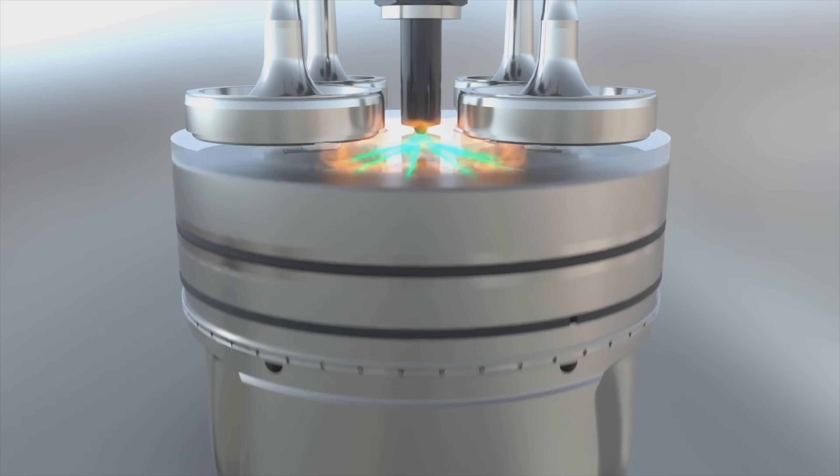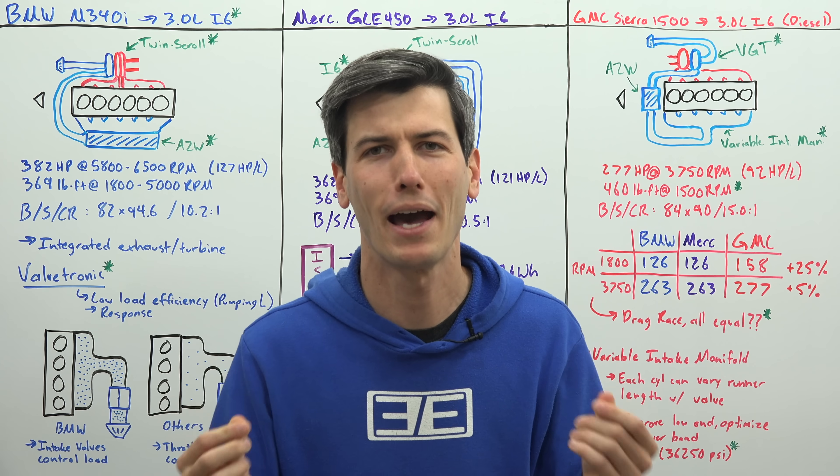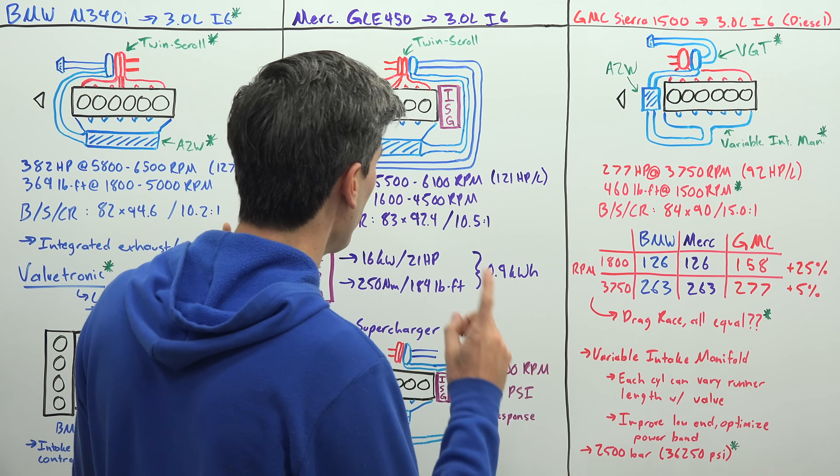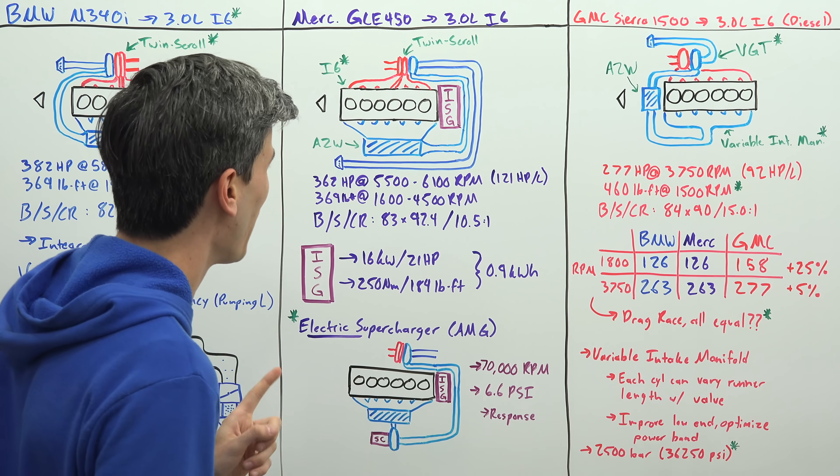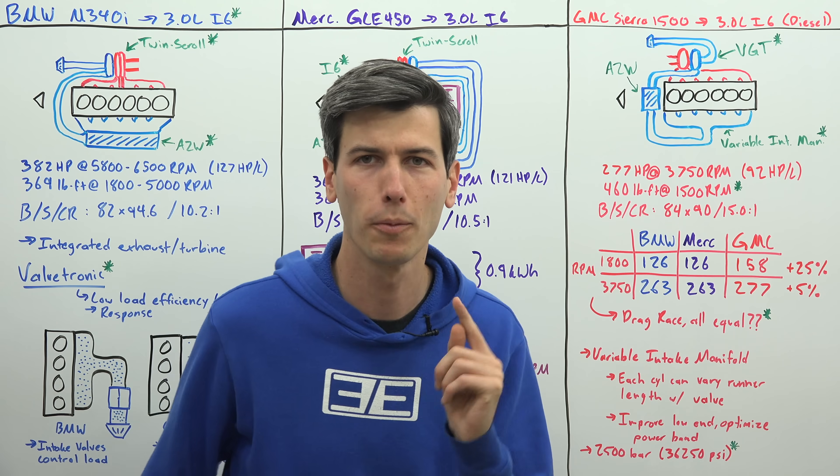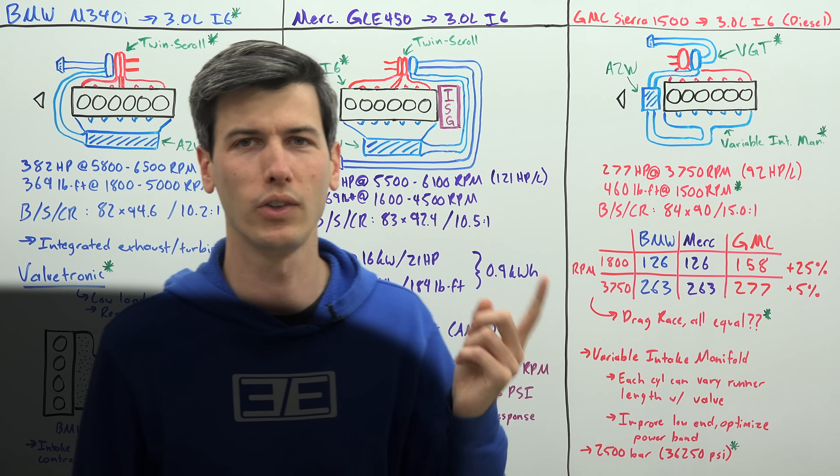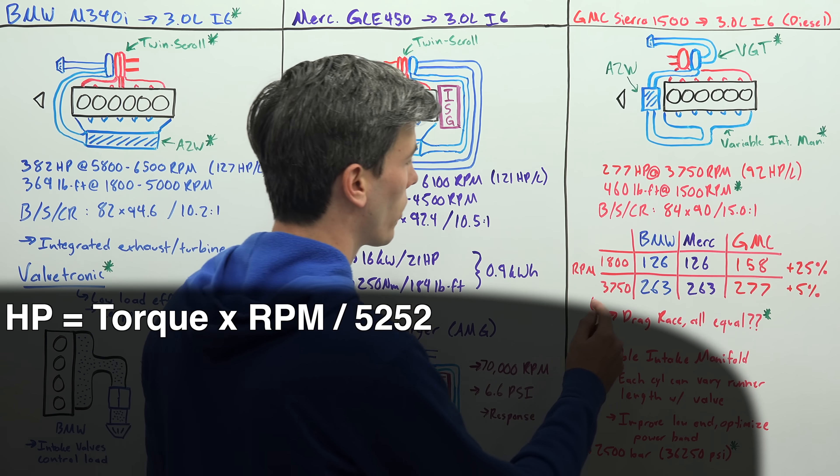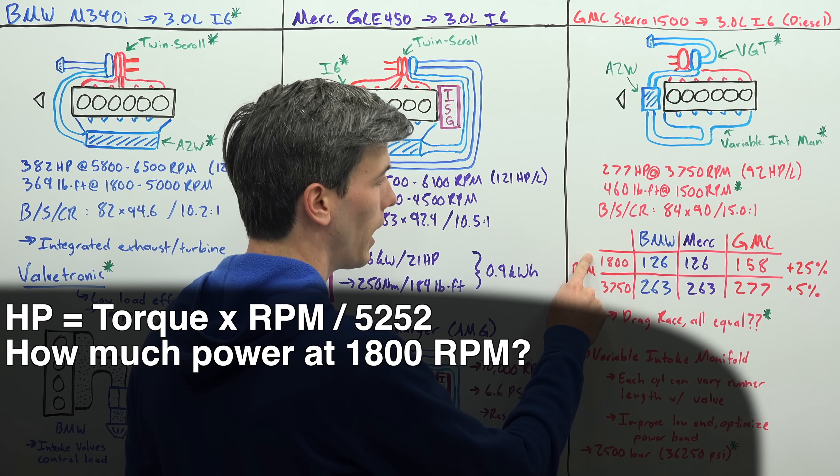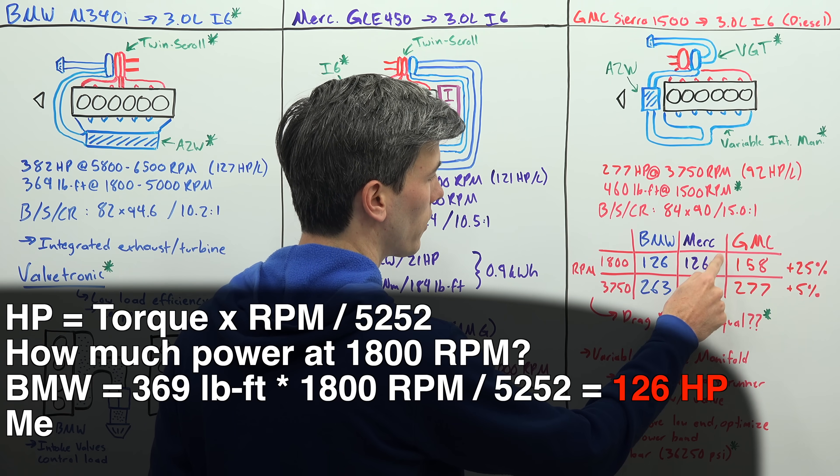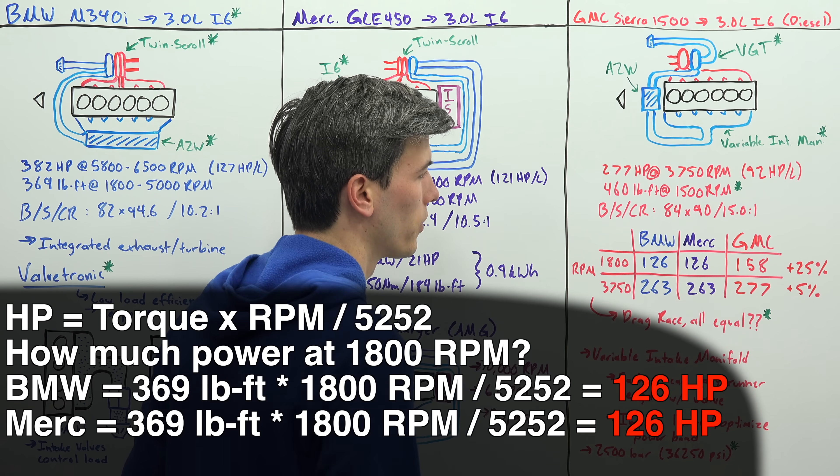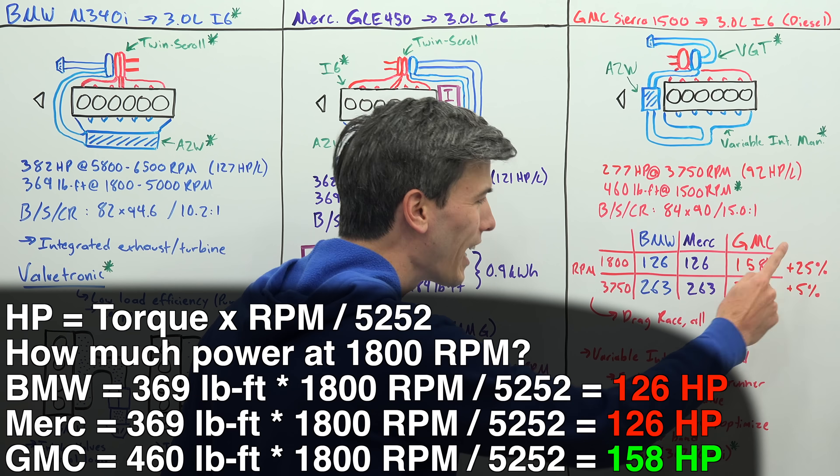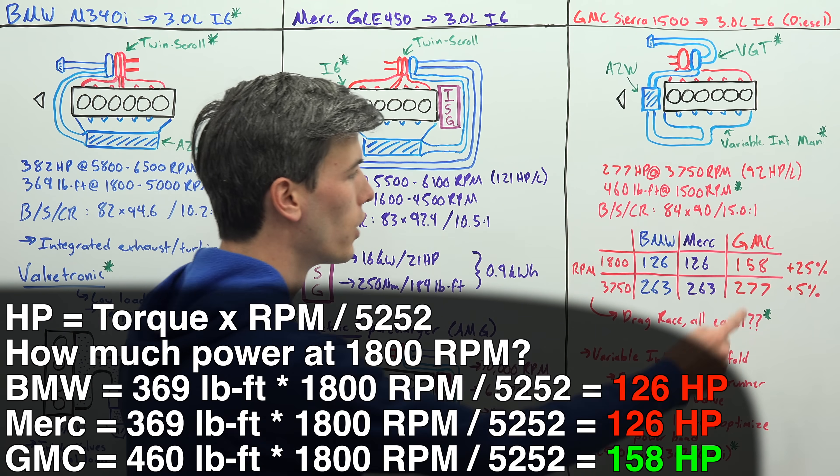The thing that I want to make very clear is power is what matters, power is what matters. Let's compare these three engines. We know how much horsepower they all make at 1800 RPM because we know how much torque they all make at 1800 RPM. We can use the equation: horsepower equals torque times RPM divided by 5252 to calculate horsepower, which I've already done. At 1800 RPM the BMW and the Mercedes are making the same amount of horsepower, 126.